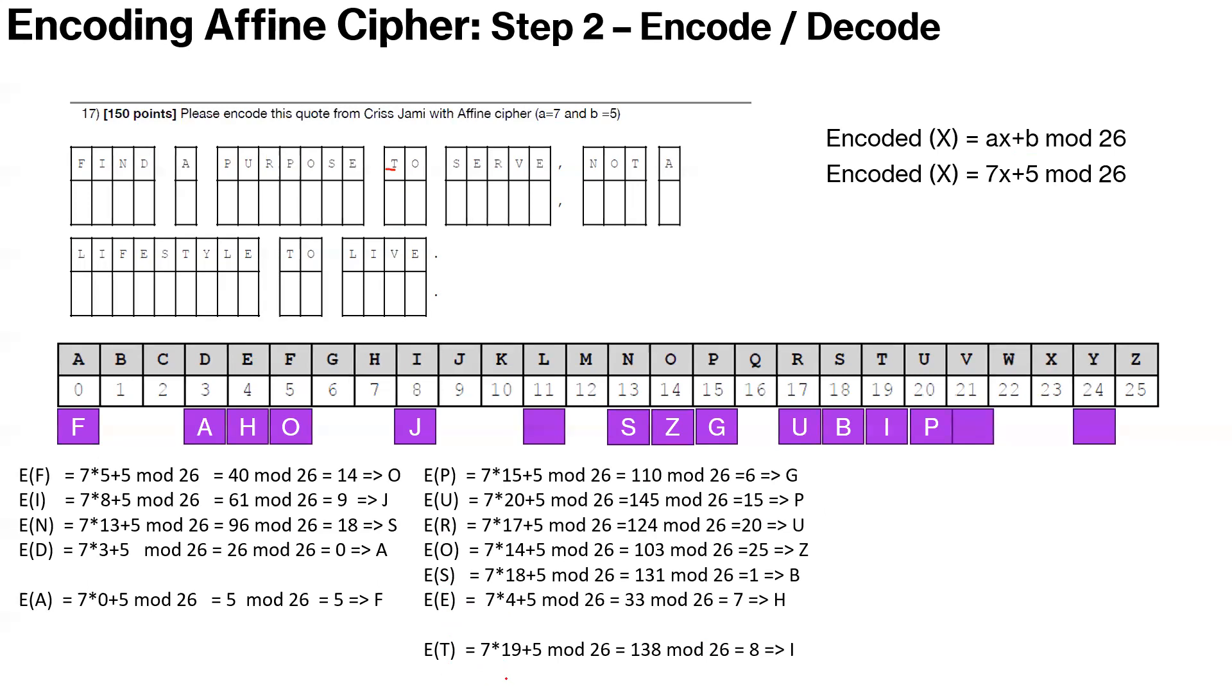We are up to here. So T is 19 out here. So 7 times 19 plus 5 is 138, 138 mod 26 is 8. So that's how T becomes I or T is encoded as I. So we continue doing this. I think there are only a few alphabets remaining to be encoded now. So we have V, L, and Y. And with that, we get encoding for all the alphabets which make up our code.